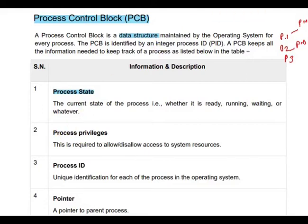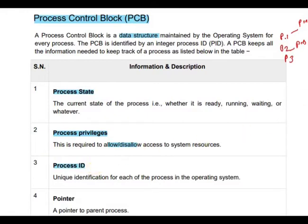Process privilege means this is used to allow or disallow access to system resources. Each process also has a unique ID, that is the Process ID.